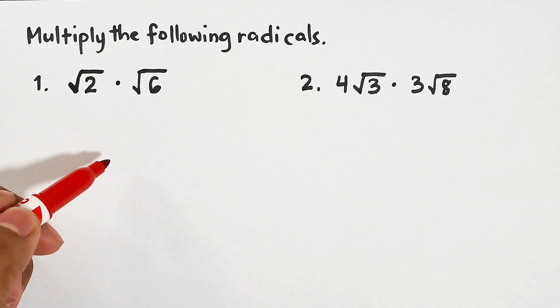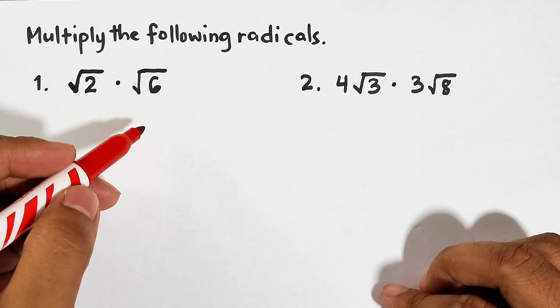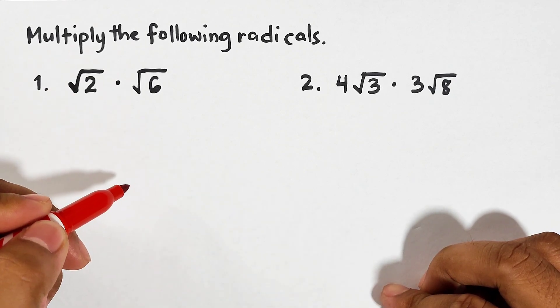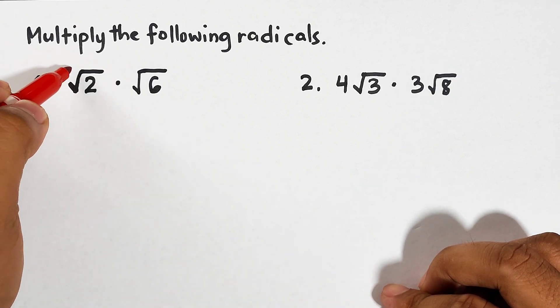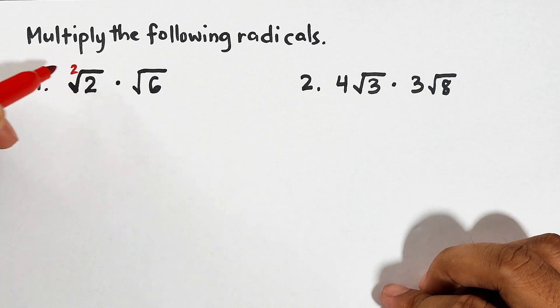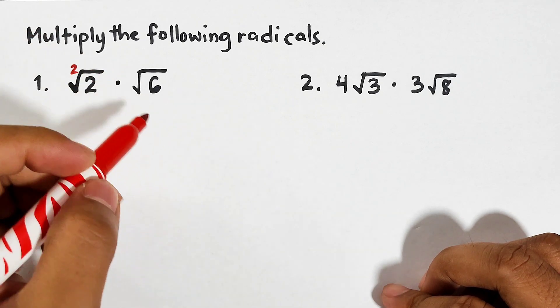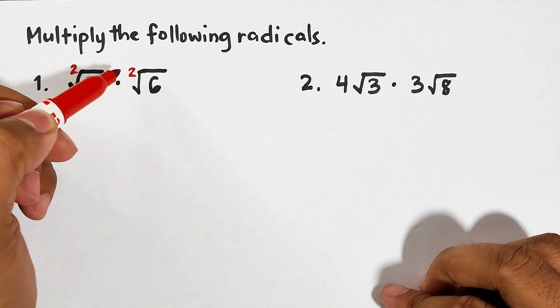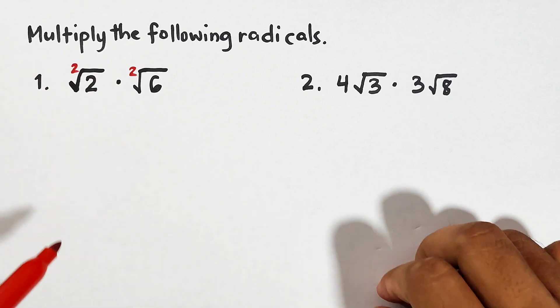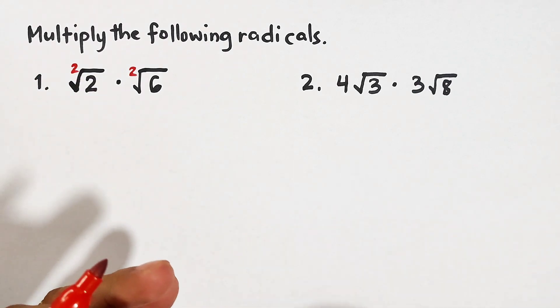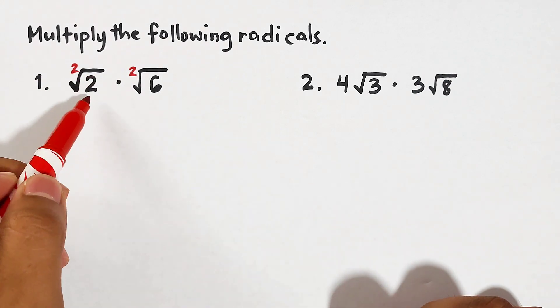Now what is the basic requirement for us to multiply radicals? Basically, the basic requirement is that they must have the same index. So here the square root of 2 has an index of 2, while the square root of 6 has the index of 2.